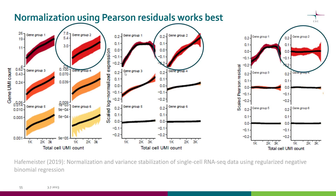Here we have three sets. On the left we have unnormalized data, where genes have been grouped based on their expression levels. High expressors are marked with dark brown and low expressors with light yellow. You can see the relationship: when the cell's total UMI count rises, the gene UMI counts also go up. If we perform global scaling normalization, we manage to get rid of that correlation in the case of low to medium expressing genes, but for high expressing genes, we still have this line going up.